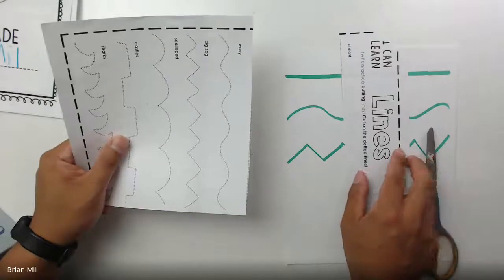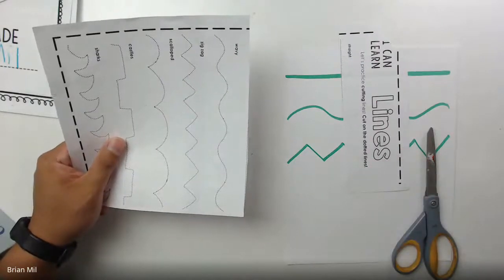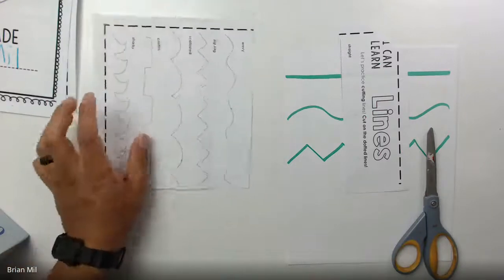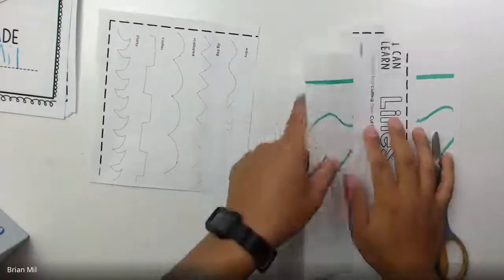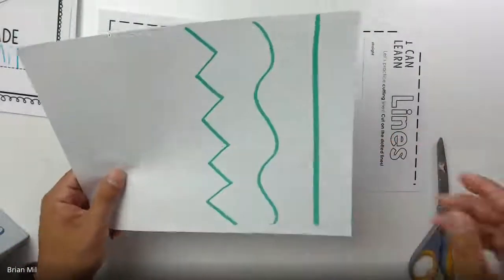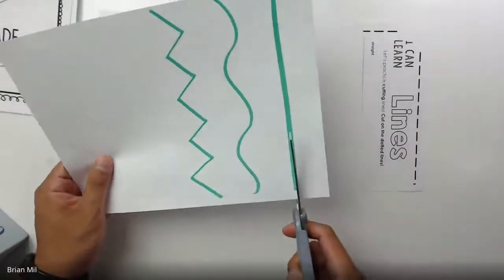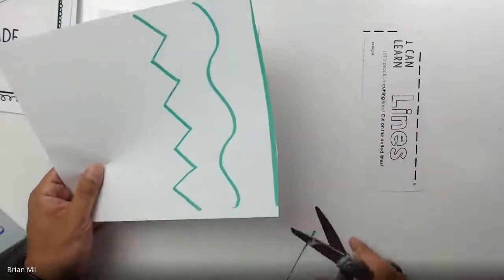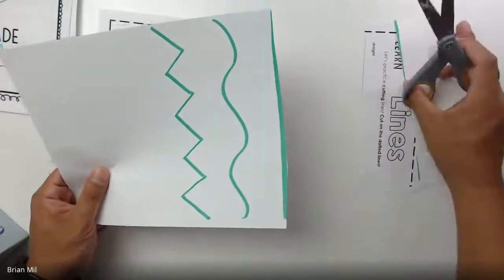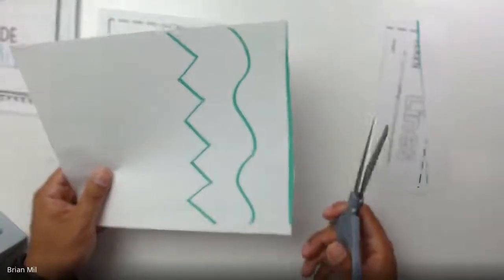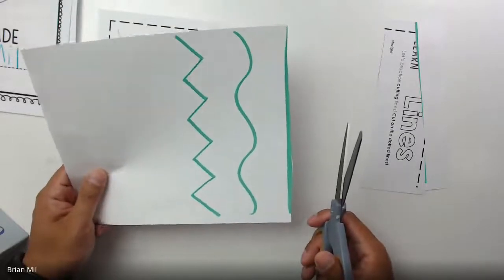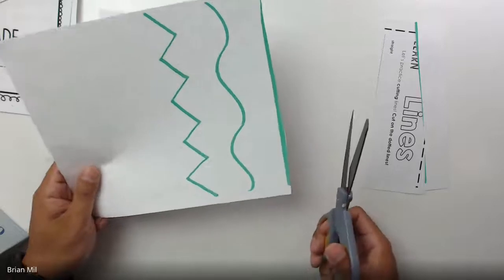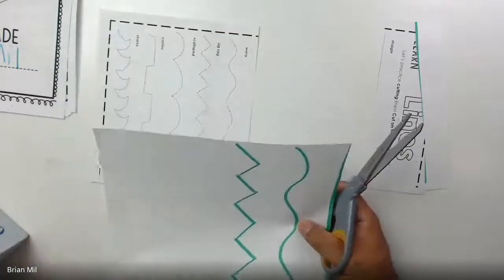You're going to take your pair of scissors and you're going to cut on this dotted straight line. You guys can copy me. I'm going to cut it completely off. Look at that. So this part where it says 'I can learn lines' was part of that straight line page. I'm going to put it to the side. That is considered scraps.